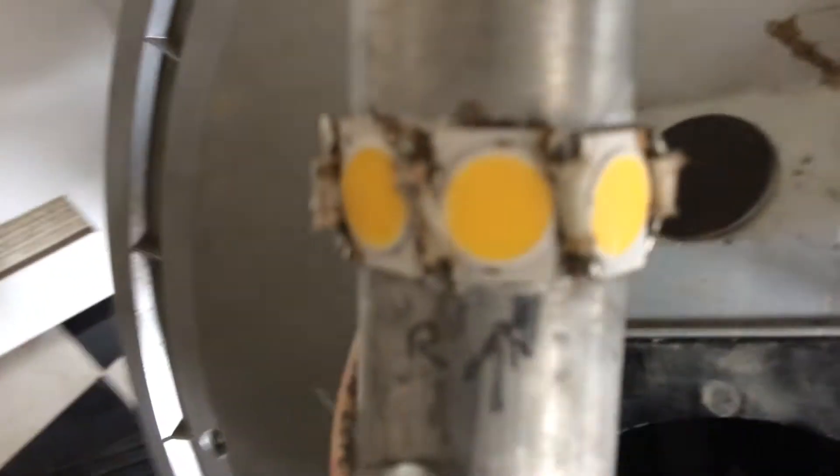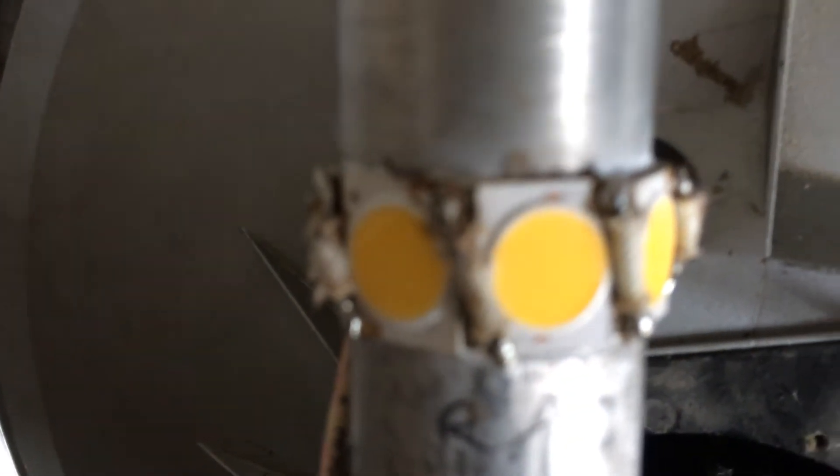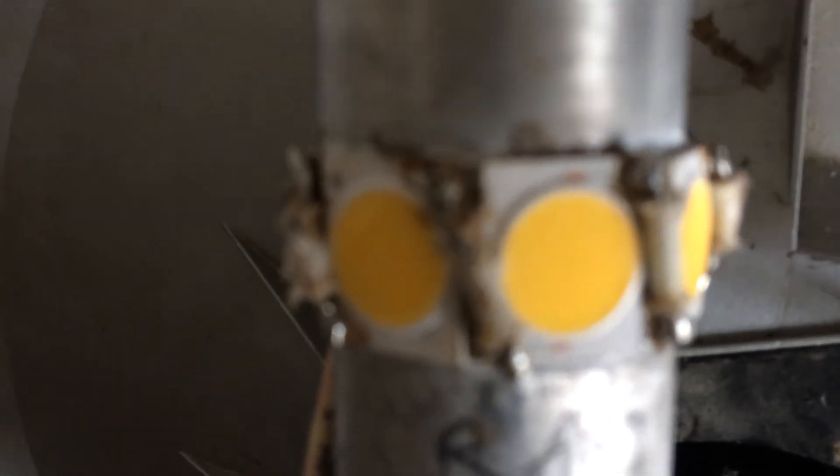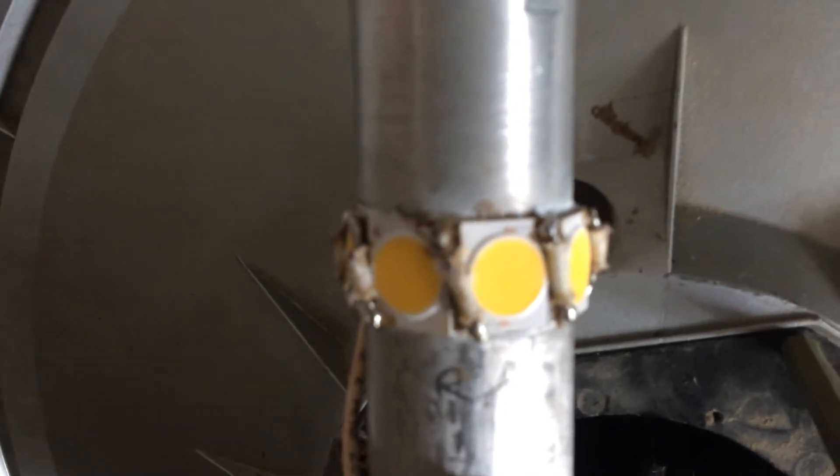And then the wire that joins the pieces, the LEDs together is heat proof wire. It has heat proof tubing on it because it gets very hot in there.